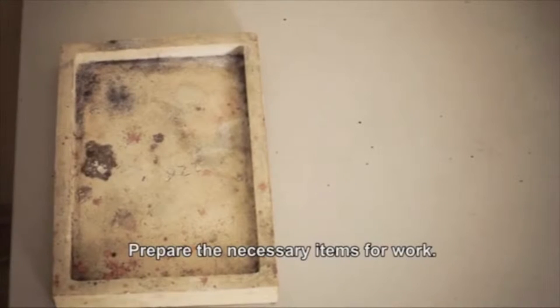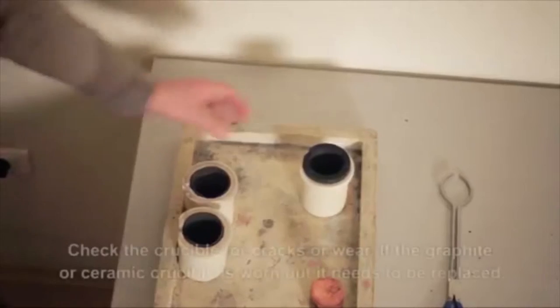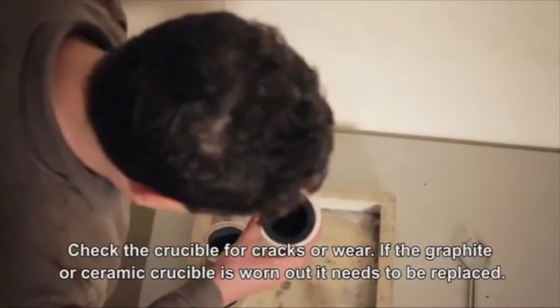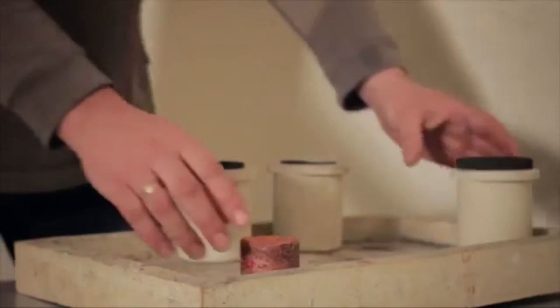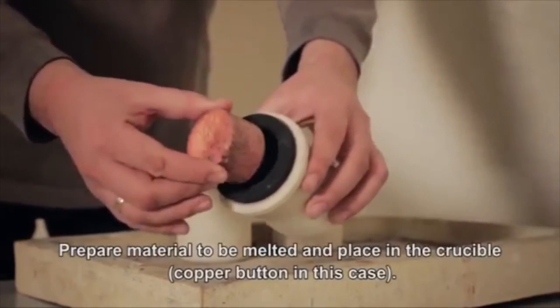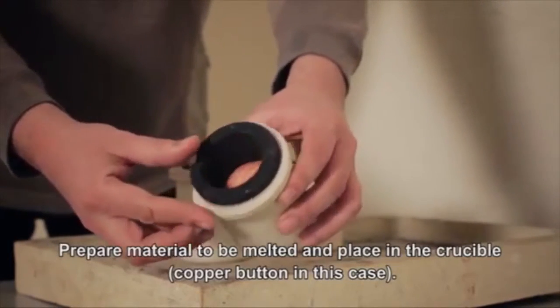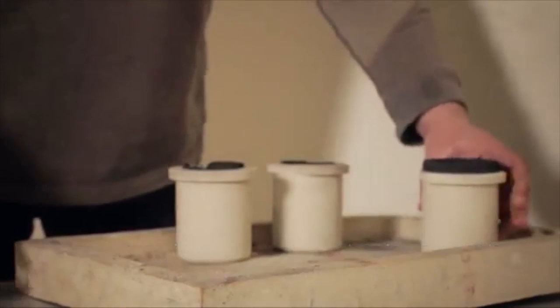Prepare the necessary items for work. Check the crucible for cracks or wear. If the graphite or ceramic crucible is worn out, it needs to be replaced. Next, prepare the material to be melted and place it in the crucible. In this case, we are using a copper button.